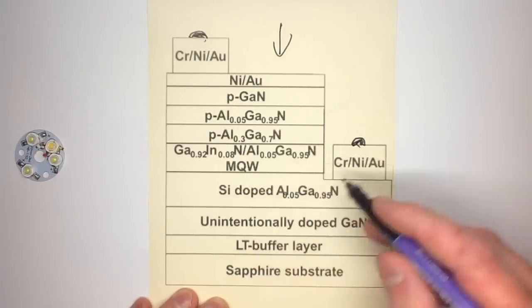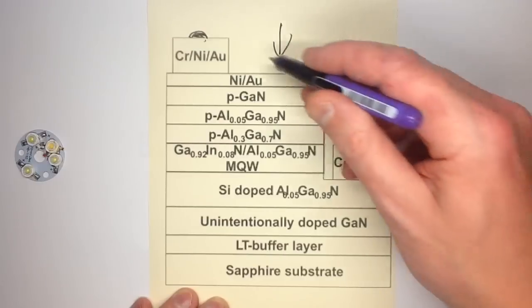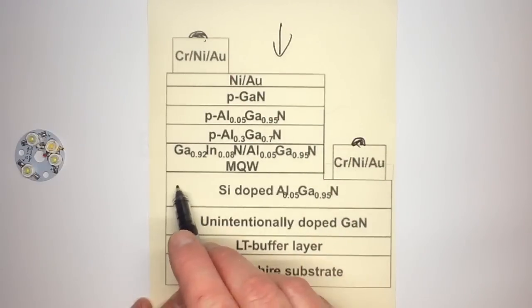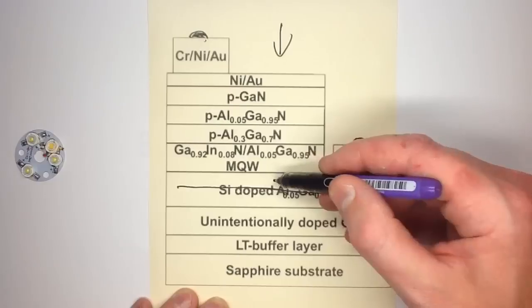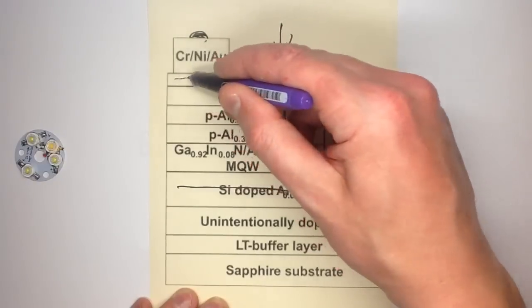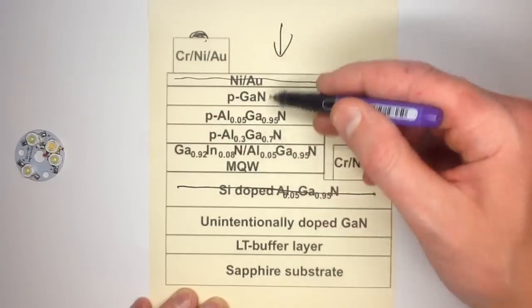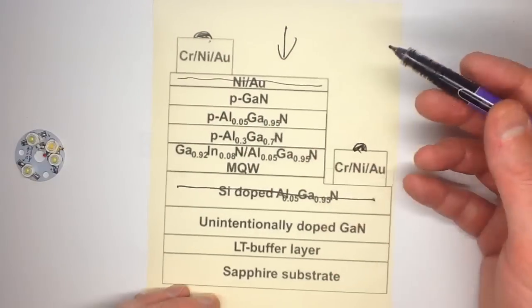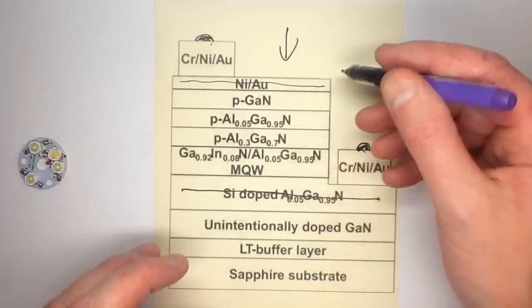So, when the current is applied across these two electrodes, this one's on this surface and it conducts across, and then the current flows. This is another conductive layer, and the current flows through these semiconductor layers, making it light up, and the light is visible from the top.